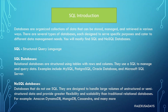Then there are NoSQL databases — databases that do not use SQL. They are designed to handle large volumes of unstructured or semi-structured data and provide greater flexibility and scalability than traditional relational databases. For example, Amazon DynamoDB, MongoDB, Cassandra, and many more. You can think about NoSQL databases like word documents: a SQL database is like an Excel spreadsheet, while a NoSQL database is more like a Word document — it's less structured and there's not a lot of relational connection between data.